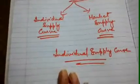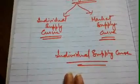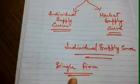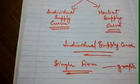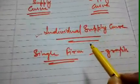Individual supply curve is the representation of a single firm in the form of a graph. That means the given data of a single firm is represented in the form of a graph. We call it the individual supply curve.